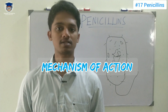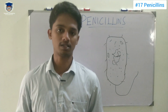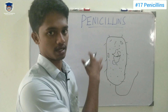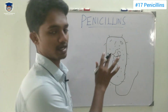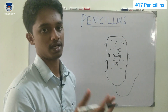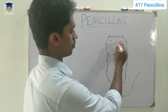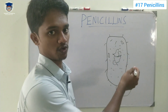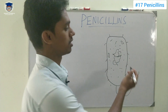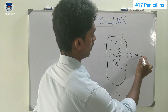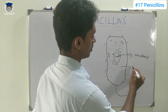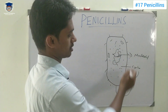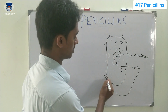Next, we go to the mechanism of action of penicillin. Let's look at the bacterial cell. If we look at a bacterial cell, there are three major components. This is the cytoplasm, and this is the nucleoid. Humans have a nucleus, but bacteria have a nucleoid. And bacteria have a cell wall.